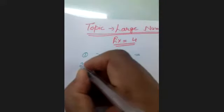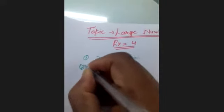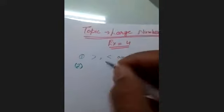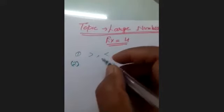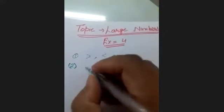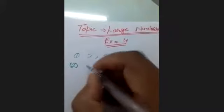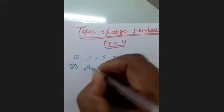In the second question, we arrange large numbers in ascending order and descending order. The second question was related to ascending order and descending order.